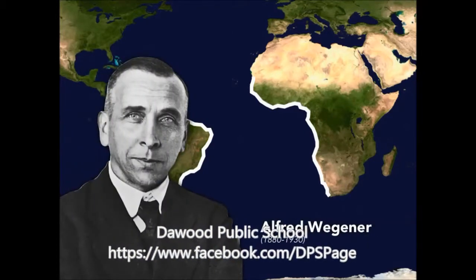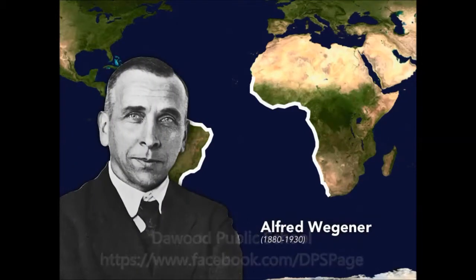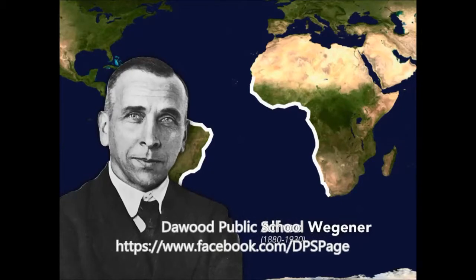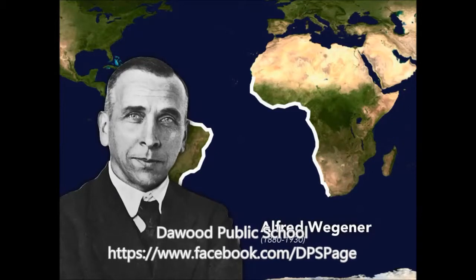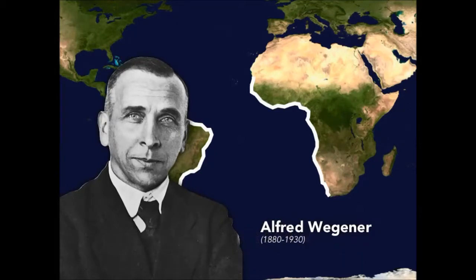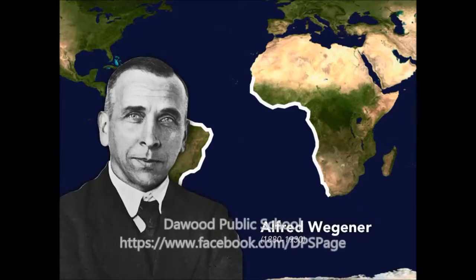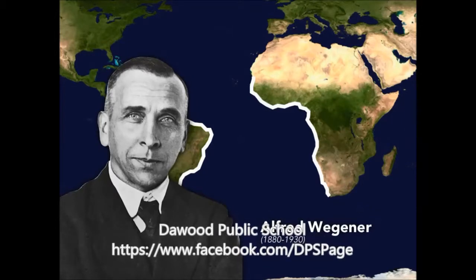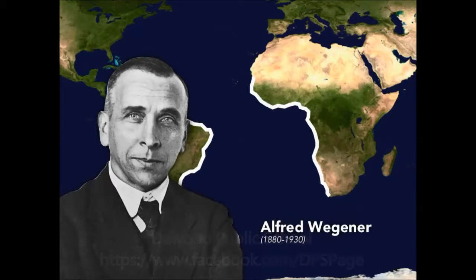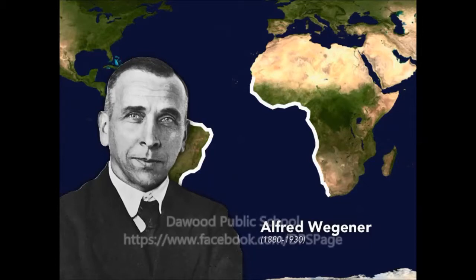Let me introduce you to one. This is Alfred Wegener. Alfred Wegener was a German meteorologist — he studied weather. He lived in the late 1800s and early 1900s. And as a scientist of the atmosphere, Wegener spent a lot of time looking at maps. He noticed this strange shape phenomenon, just like you did. The problem is, he couldn't get past it. He actually devoted his whole life to it.